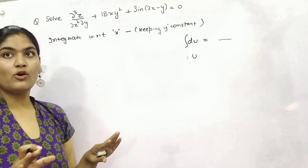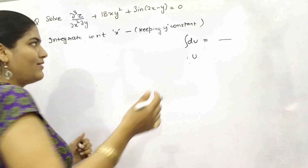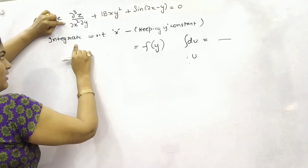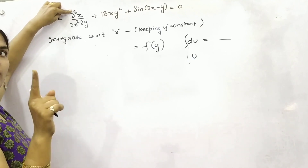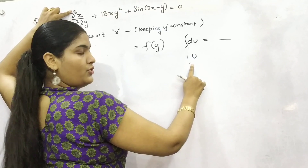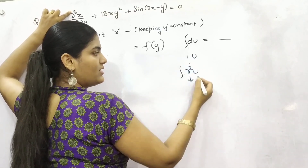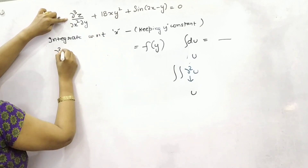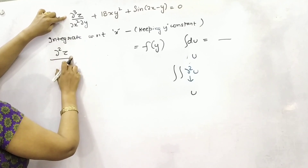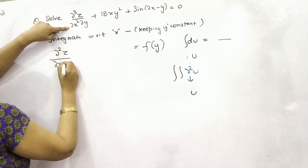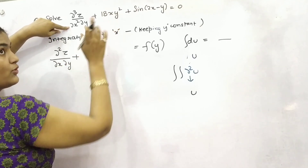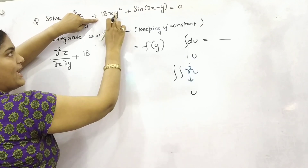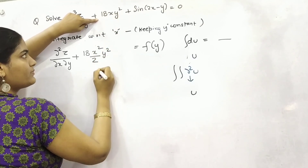If you keep y constant, that means the constant of integration will be in the form of some f(y) — a function in terms of y. Integrate it. If you are integrating one time, it will remove one partial differentiation order. du gives u; if you have d²u, you need to integrate it twice to get u. So integrating one time reduces the order by 1 — from triple down to double partial differentiation, because you did one x, so 1 x is left. For 18 and the polynomial in x, add one to the power and divide by the same, keeping y constant.